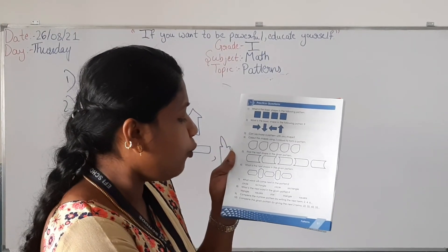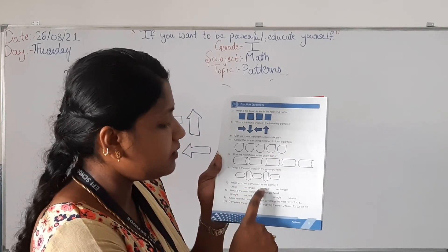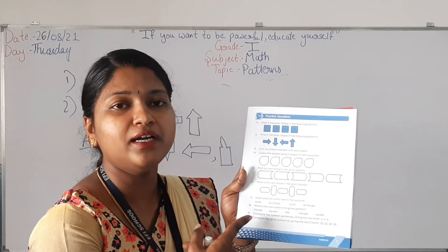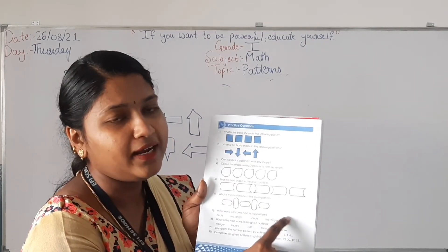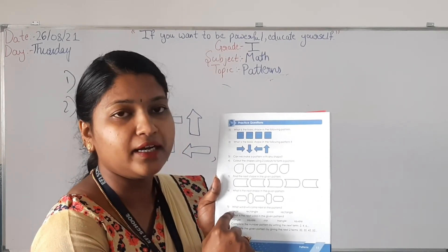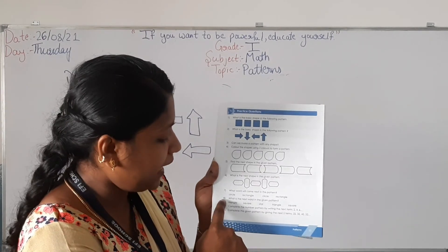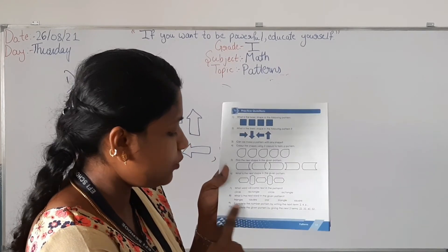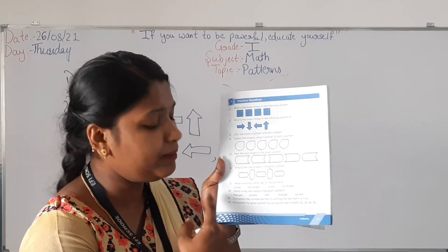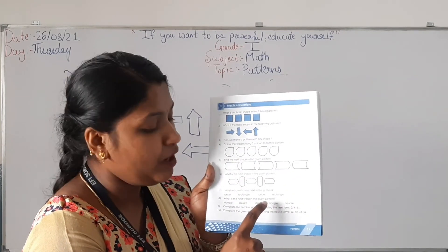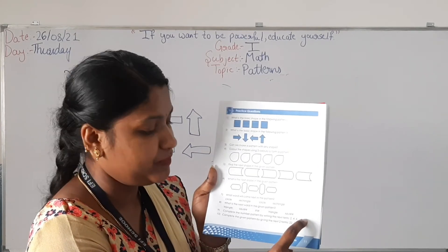Question 7: What word will come next in the pattern? The words are circle, rectangle, circle, rectangle. The basic words are circle and rectangle. After rectangle, the word circle will come. Question 8: The words are triangle, square, star, triangle, square. The basic words are triangle, square, star. After square the remaining word is star, so the next word is star.